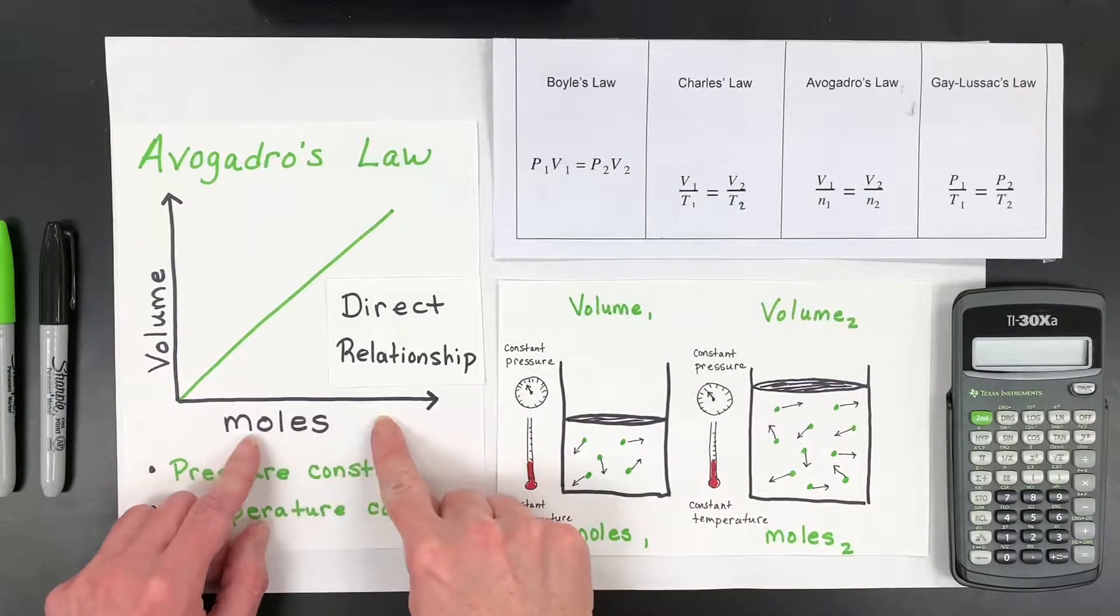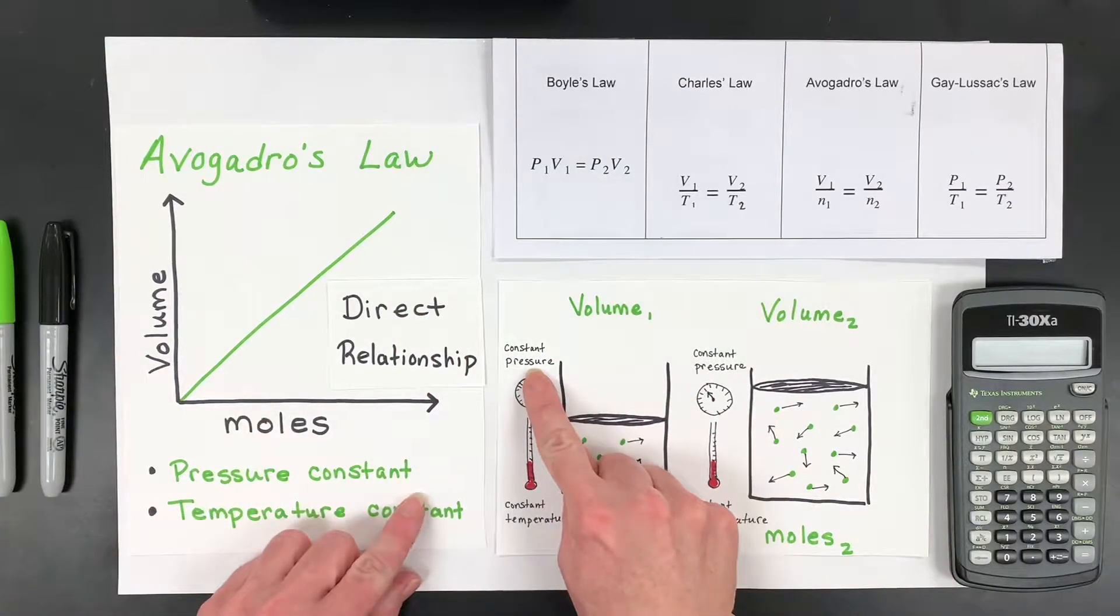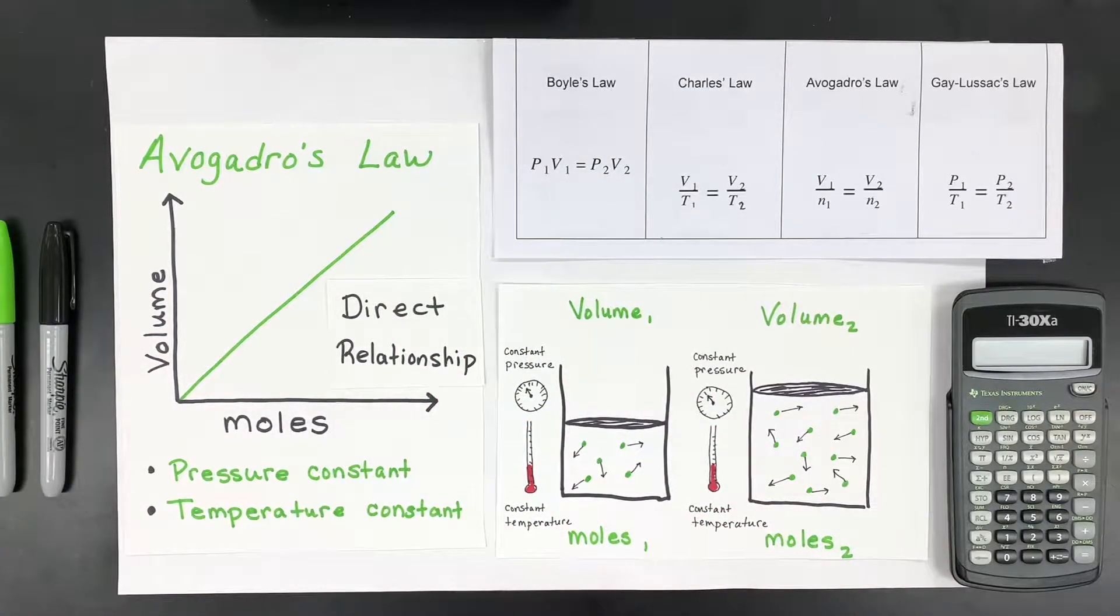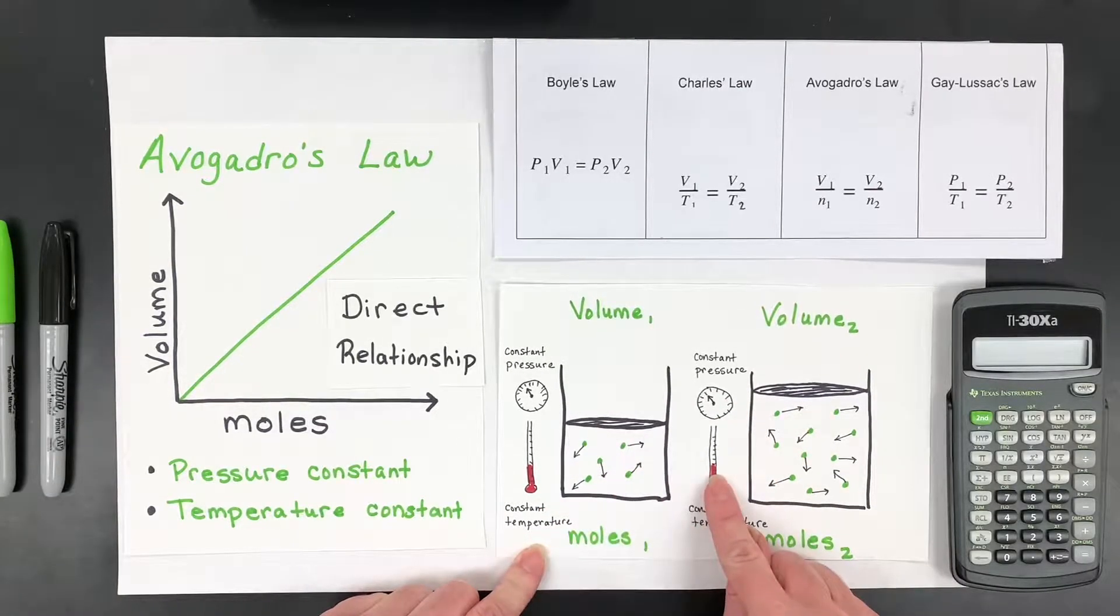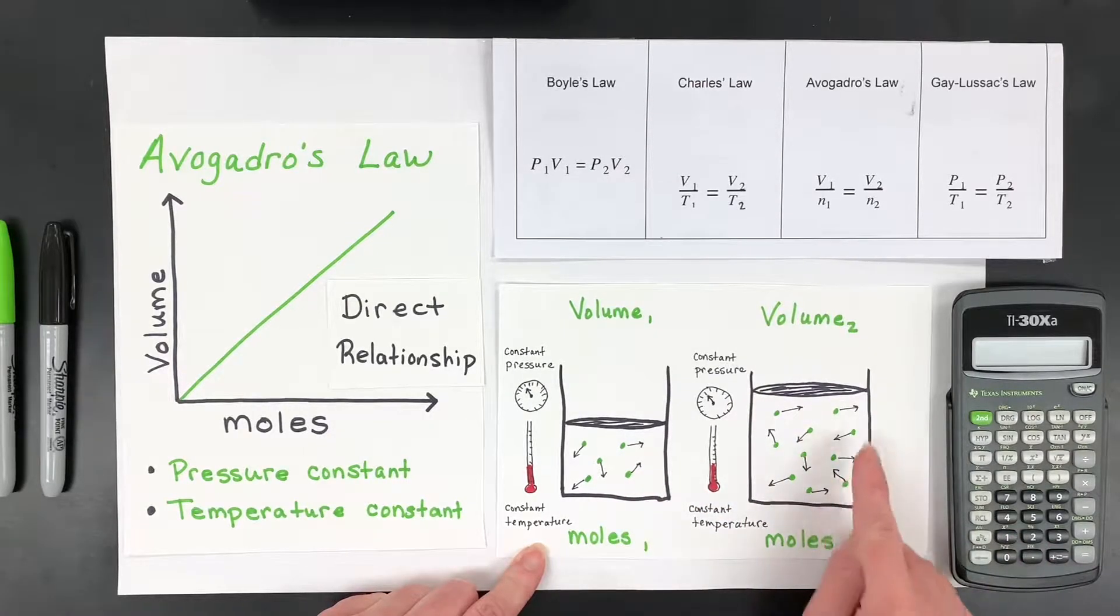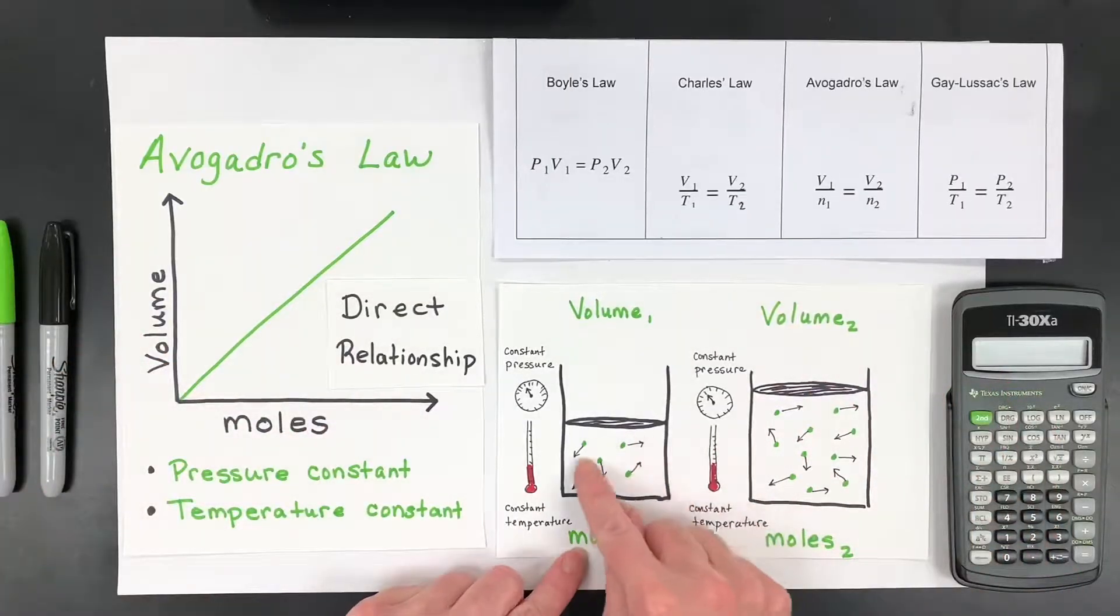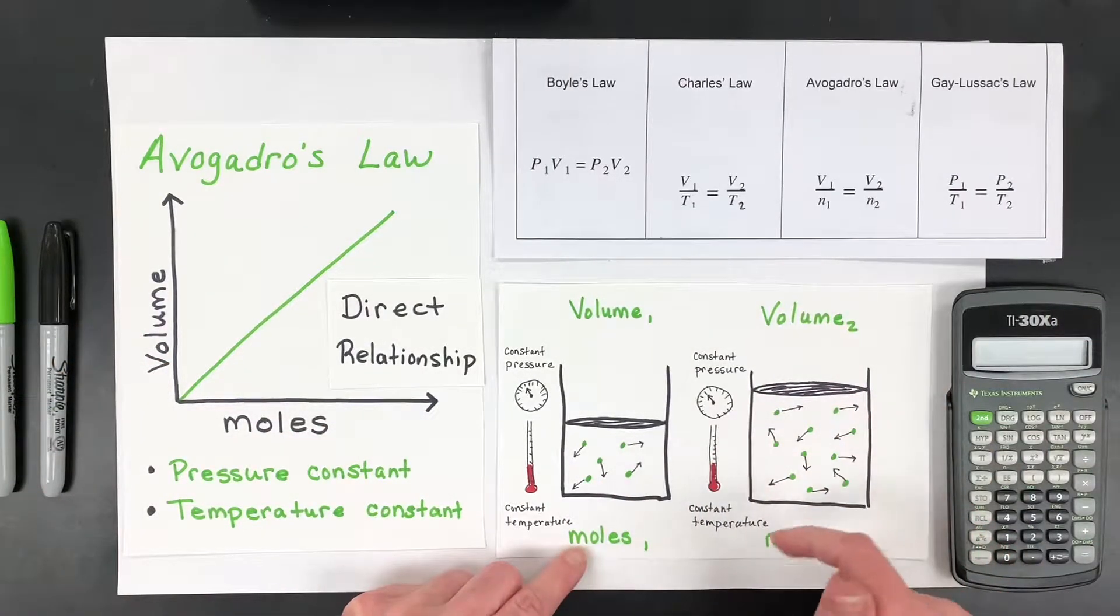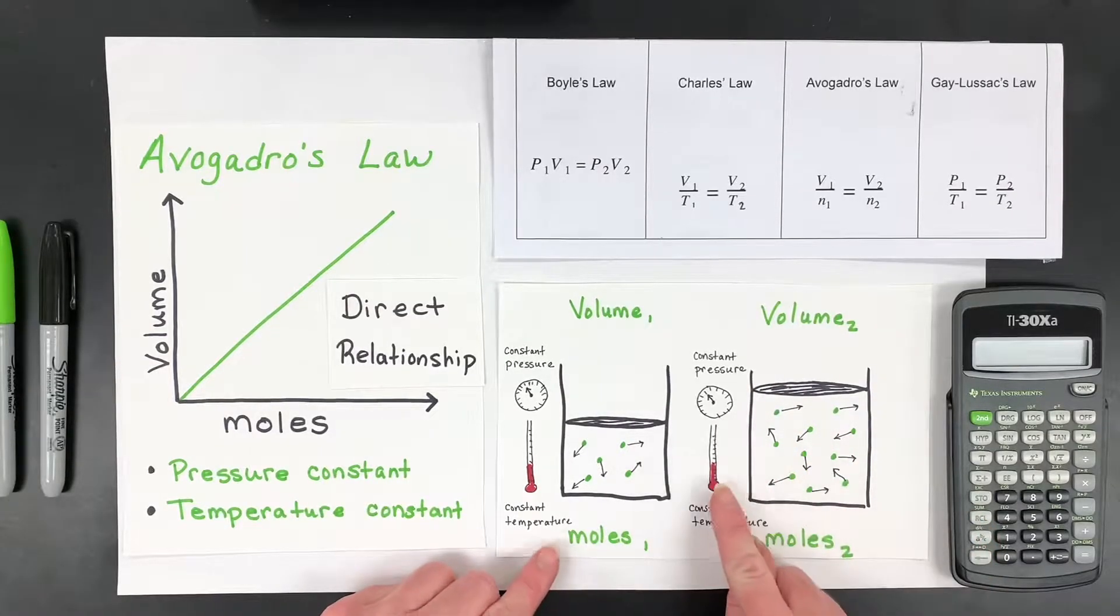If we have more moles of gas, the volume will have to go up to keep the constant pressure at that constant temperature. So here's my particulate view. And I'm showing that with the thermometer that they're moving at the same average kinetic energy. So my arrows on average should be about the same length overall, because it's a whole sample of gas. Temperature is the average kinetic energy of all the particles. And I'm trying to show that it's staying the same.